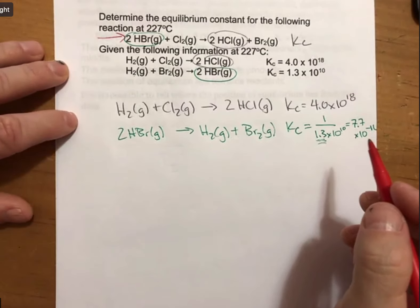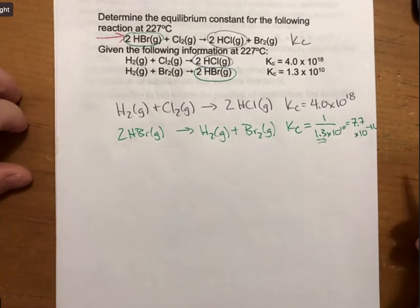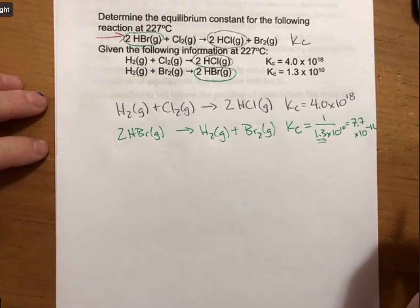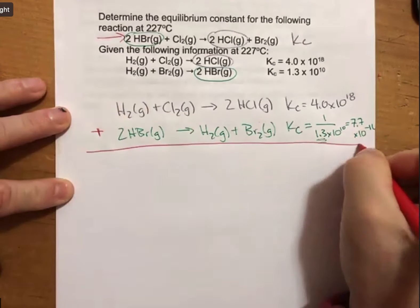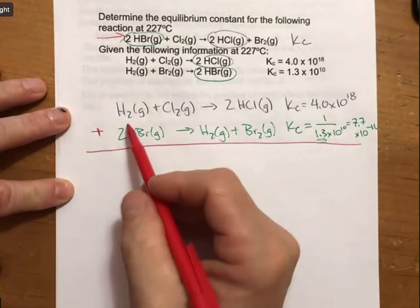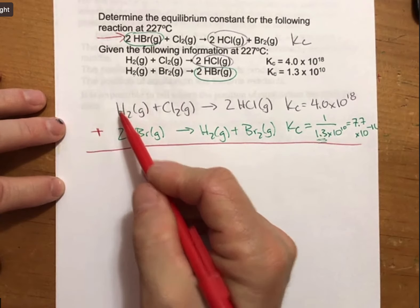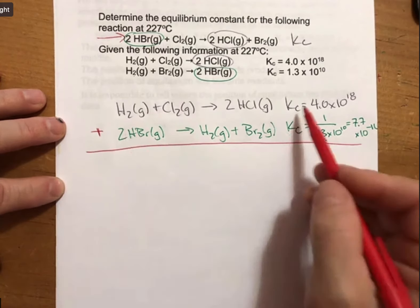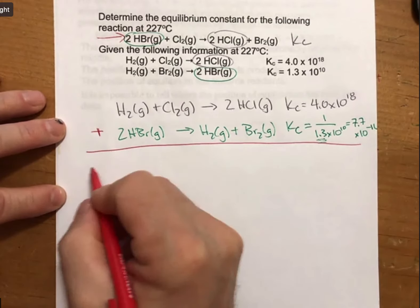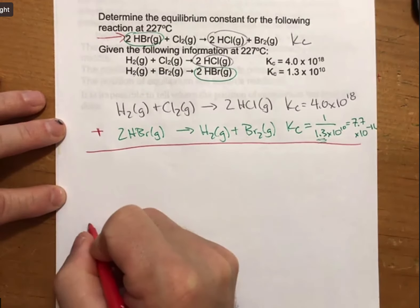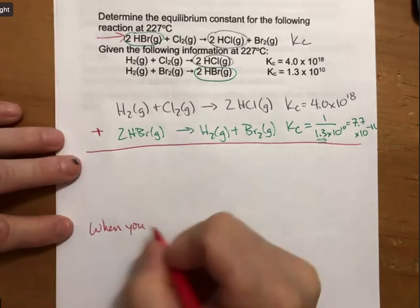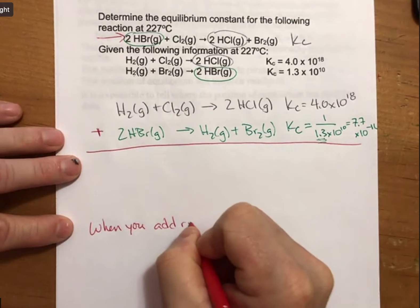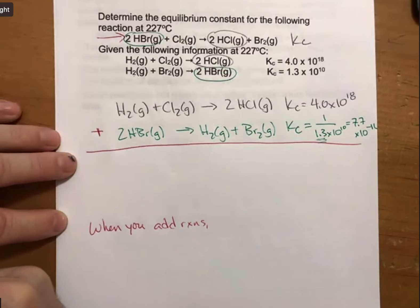This again is very similar to Hess's law, which we did for delta H's a few chapters ago. Now the last part, which is again like Hess's law: when you add reactions, you multiply Kc values. When you add reactions, you multiply Kc values.